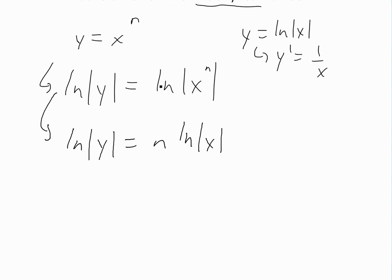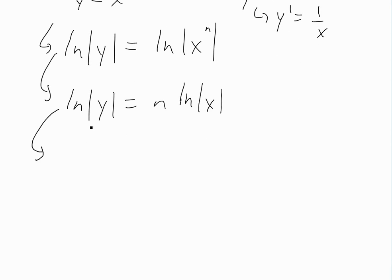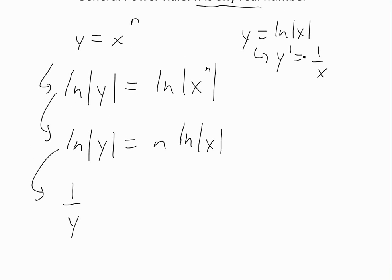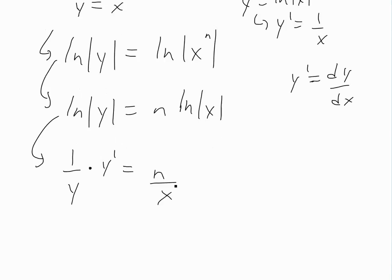This is the reason we use logarithmic differentiation — we can bring the n down so we don't have an exponent to deal with. Now we apply implicit differentiation. The derivative of ln y is 1 over y, and we multiply by y prime using the chain rule. On the right side, n is just a constant, so we get n times 1 over x, which is n over x.